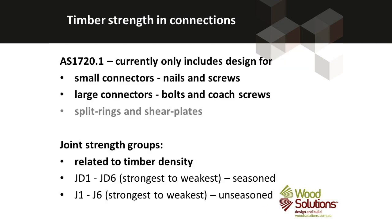In this unit we're going to look at small connectors — nails and screws — and large connectors — bolts and coach screws. These are the only ones covered by AS1720.1. The standard also has capacities for split rings and shear plates, but these are largely historical; you'll only encounter them if you have to evaluate the capacity of an existing structure that uses those joint types.